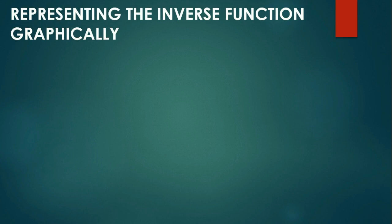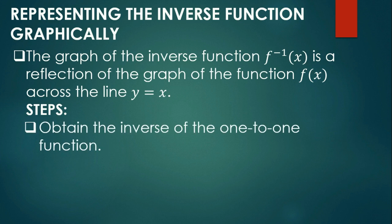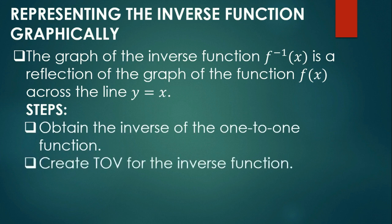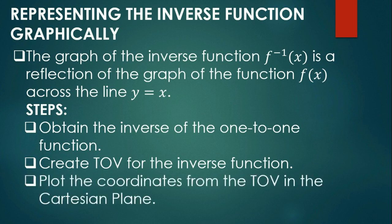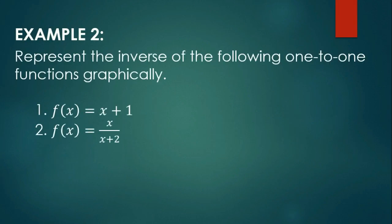How about representing the inverse function graphically? The graph of the inverse function f⁻¹(x) is a reflection of the graph of f(x) across the line y = x. Steps in representing the inverse function graphically: first, obtain the inverse of the one-to-one function; second, create a table of values for the inverse function; third, plot the coordinates from the table of values in the Cartesian plane and connect the dots. For the solution, watch this video.